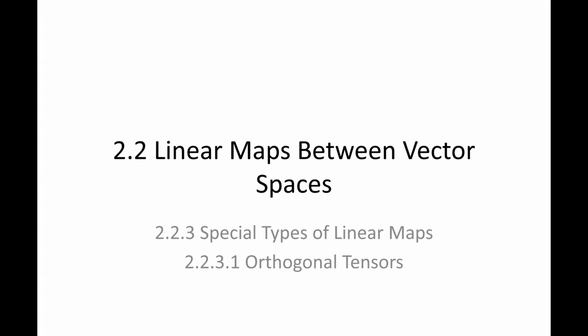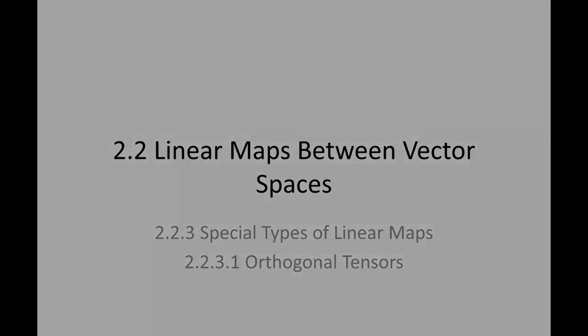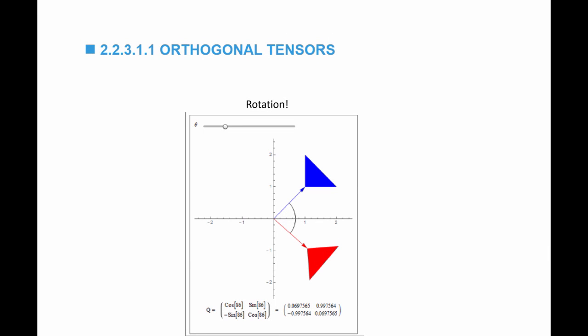The first special type of linear maps we're going to study is orthogonal tensors. The first function of orthogonal tensors is rotation of objects. For example, you can see a triangle in a two-dimensional vector space. By applying a rotation orthogonal tensor, I can rotate every vector in that triangle by an angle of 86 degrees, and the matrix of rotation is Q. If I multiply Q by every vector in the original triangle, I get this rotated triangle.